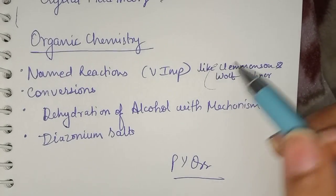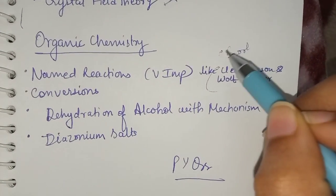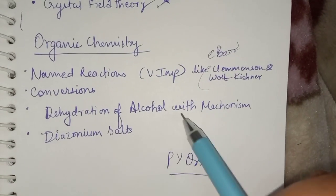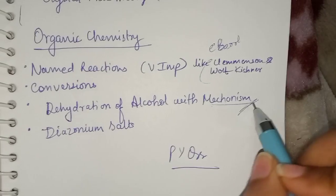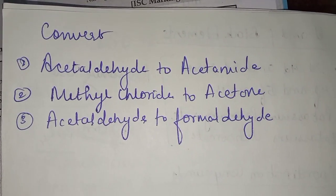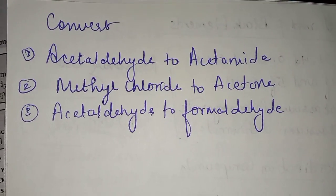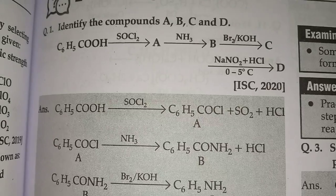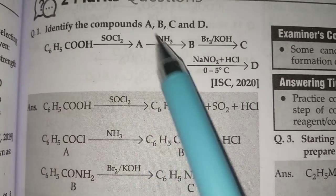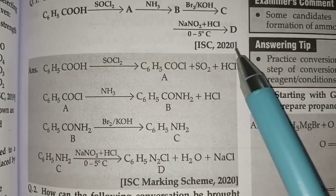So you can just revise all of them from the ebook also of important reactions. Dehydration of alcohol with mechanism, diazonium salts. So conversions like acetaldehyde to acetamide, then methyl chloride to acetone, acetaldehyde to formaldehyde. Then identify the compounds A, B, C, and D. They have written A, B, C and you have to solve it. This came in 2020 boards.